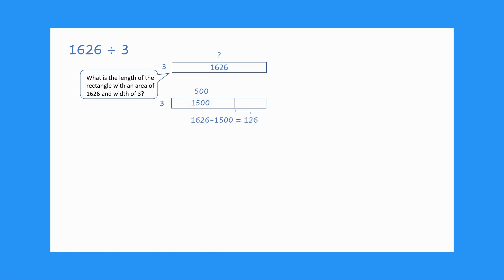Next, we think: how many are in three groups that total 126? There are three groups of 40 in 120. We partition our rectangle to show the area of 120 and label the partition length 40. We then take three groups of 40, or 120, from 126, which equals 6.